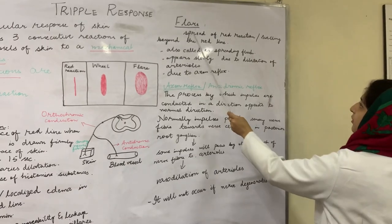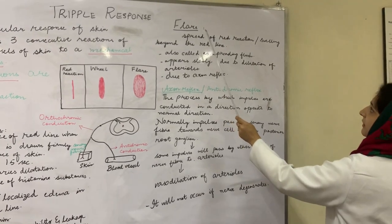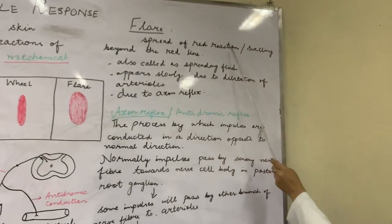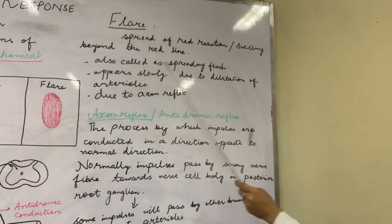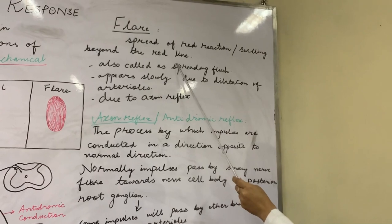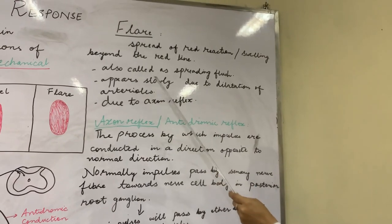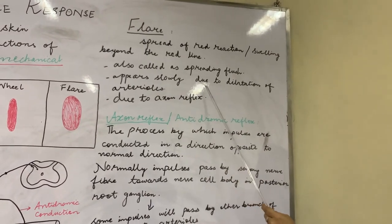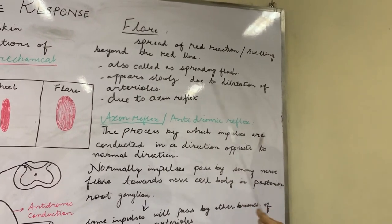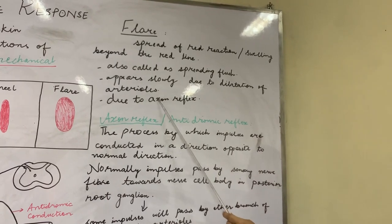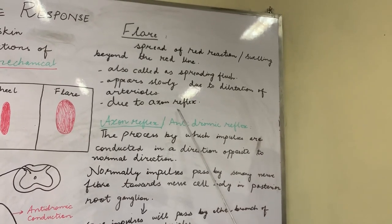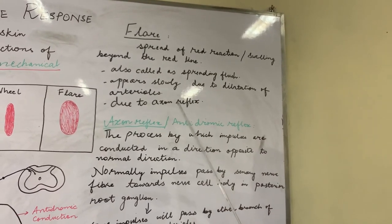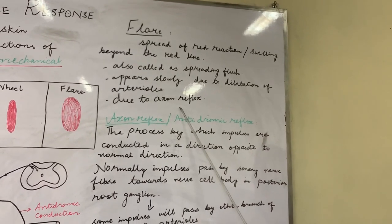The third response is the flare. Flare is the spread of the red reaction or swelling beyond the red line. It is also called spreading flush. It appears slowly due to the dilatation of the arterioles.